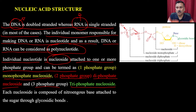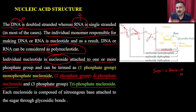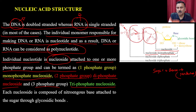If the sugar is attached to the base, it is called a nucleoside. If the nucleoside is attached to one phosphate molecule, it is called nucleotide (nucleoside monophosphate). Attached to two phosphate groups — nucleoside diphosphate; attached to three — nucleoside triphosphate. The base is attached to the sugar molecule with the help of a glycosidic bond. If the 2' OH is present it is ribose; if absent, it is deoxyribose.